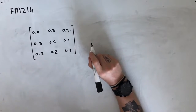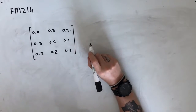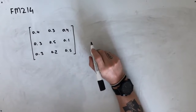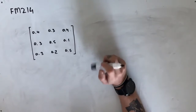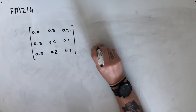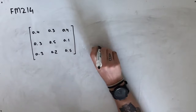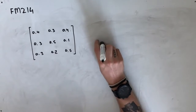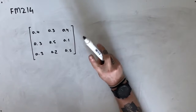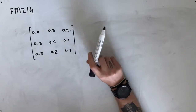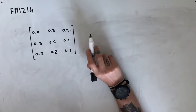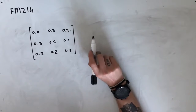Hey guys, and welcome to question FM 214 of the Further Maths Fortify Study Guide. This question reads: each week the 180 employees of a factory choose ham, peanut butter, or jam for afternoon lunch from the canteen. The transition matrix below shows how the employees' choices change from day to day.